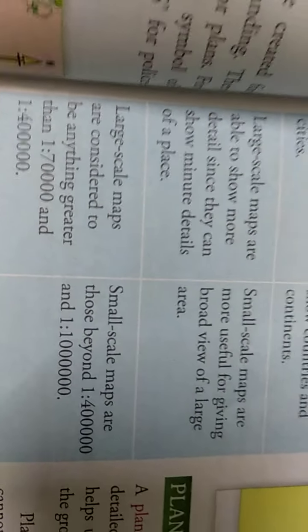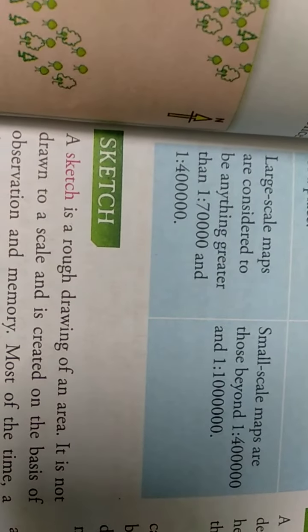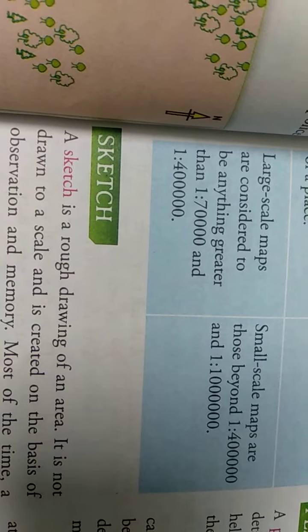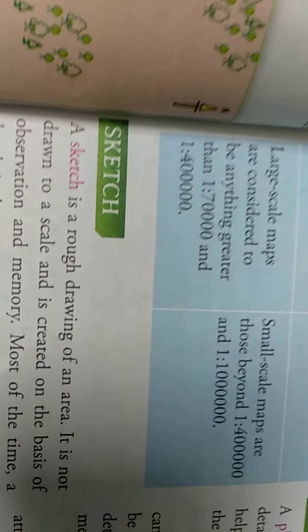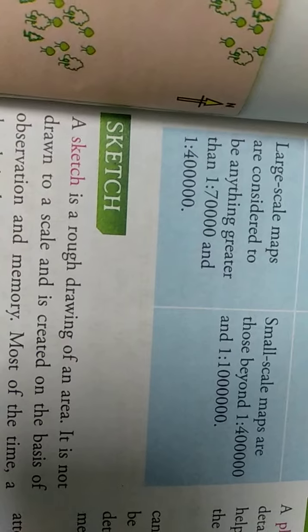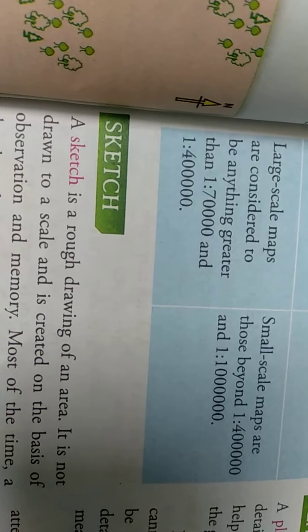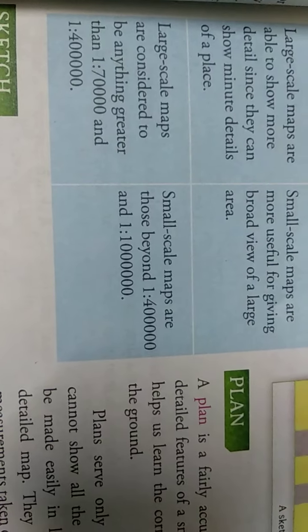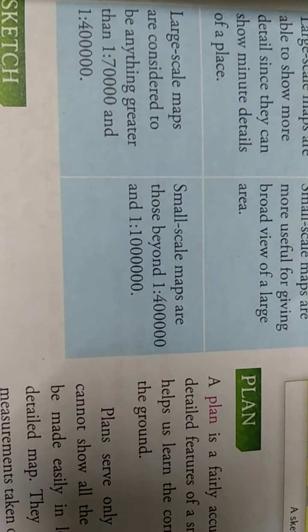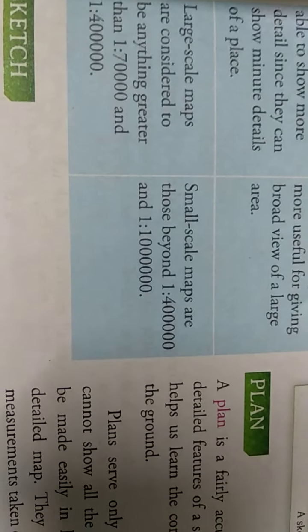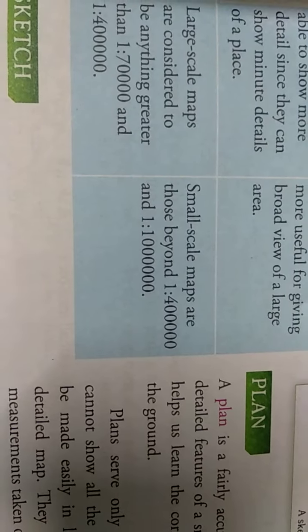Small scale maps are more useful for giving broad views about a large area. Large scale maps are considered to be anything greater than 1 is to 70,000 to 1 is to 400,000, while small scale is 1 is to 400,000 to 10 lakhs.